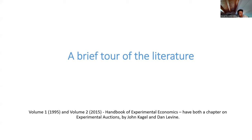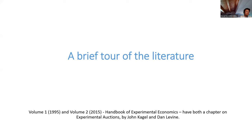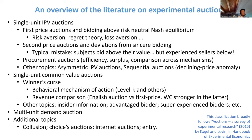The experimental auction literature is as old as I am, maybe a little bit more. The Handbook of Experimental Economics volumes one (1995) and two (2015) both have chapters on experimental auctions, and these slides are broadly based on those chapters. This is an overview of the literature — single-unit IPV auctions, procurement auctions, common value auctions, multi-unit auctions, and additional topics like collusion, internet auctions, and entry.